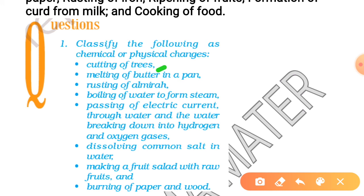Melting of butter in pan. Butter will melt to form liquid. Nothing new. Physical change. Rusting of almira. Chemical change. Boiling of water to form steam. We have discussed it. Again, a physical change.